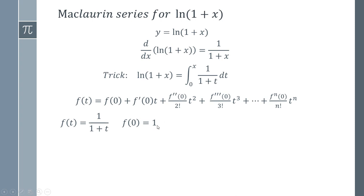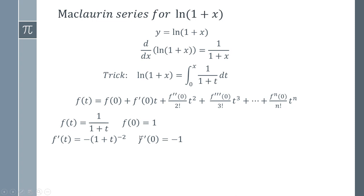We evaluate f(0) by substituting t=0, which gives 1/1, so simply 1. We need to find the derivative: 1/(1+t) becomes (1+t)^(-1), and when we differentiate we multiply by -1 and subtract 1 from the power, giving -(1+t)^(-2). Substituting t=0 gives us -1. Finding the derivative again — noting the chain rule's inside function just gives 1, so we can effectively ignore it — we multiply by -2 and subtract 1 from the power.